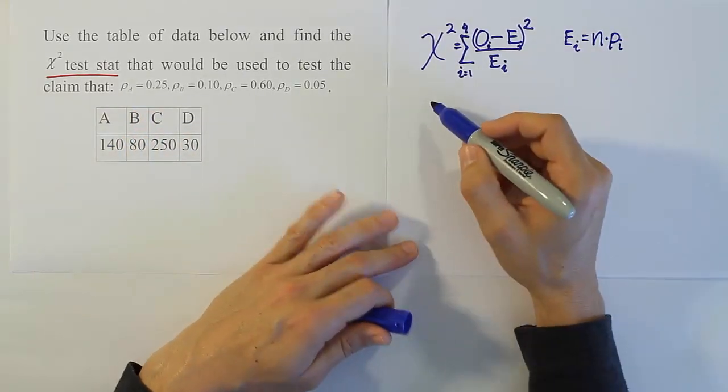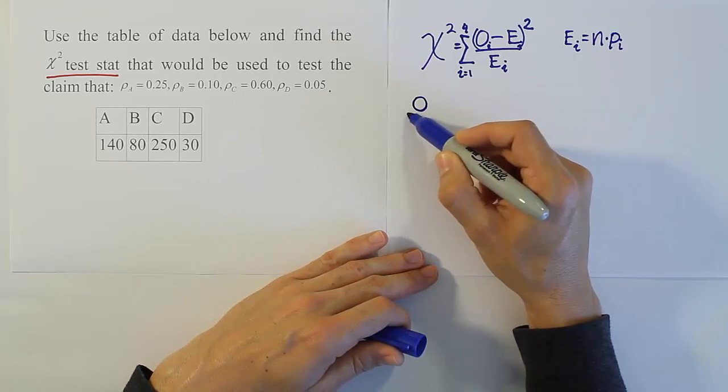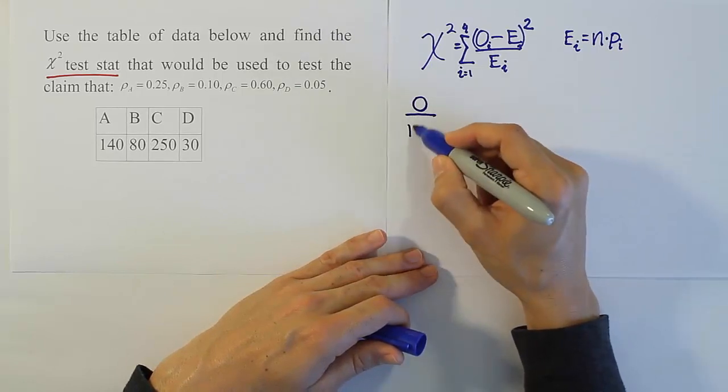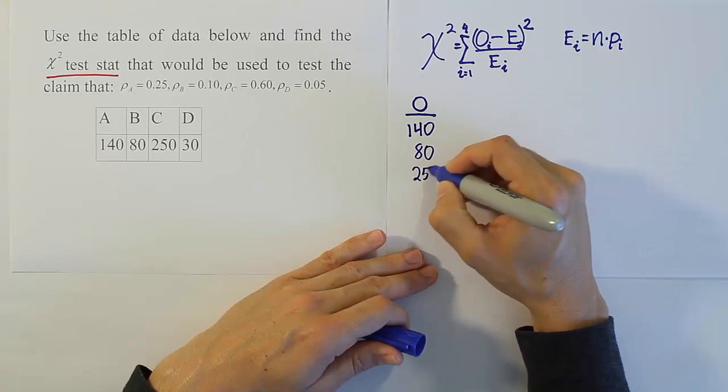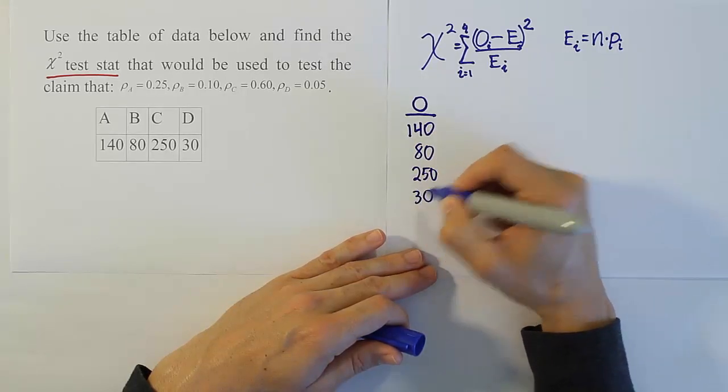So let's do our columns like we did before. So we'll have observations first. Let's list the numbers in there. So we have 140, we have 80, we have 250, and we have 30. So those are our observed values.